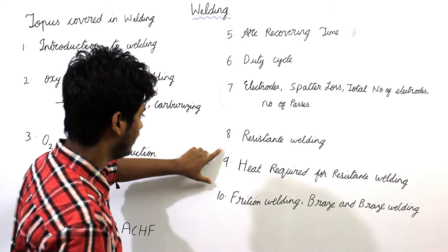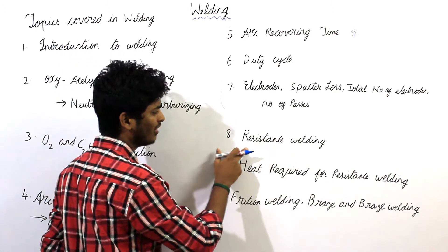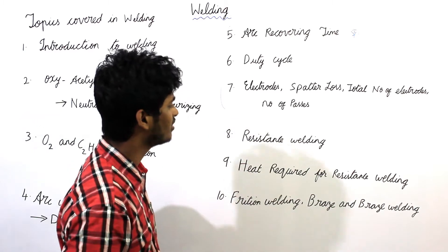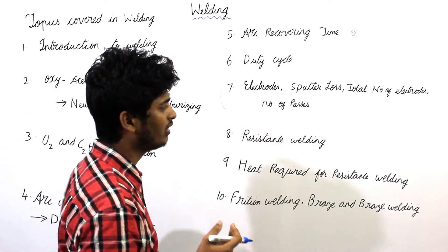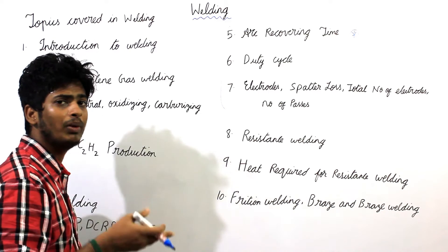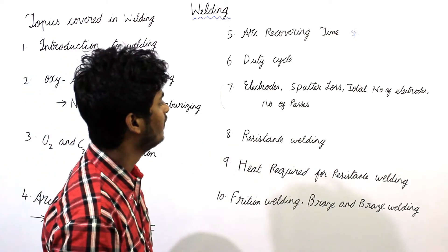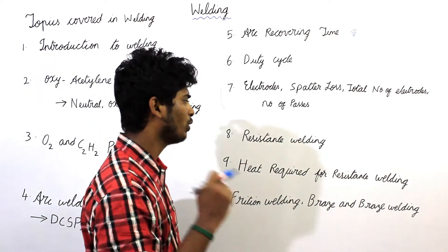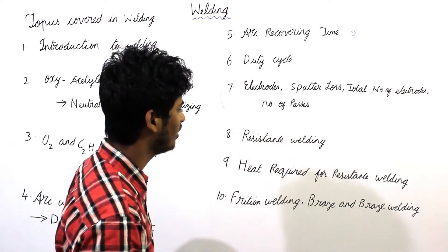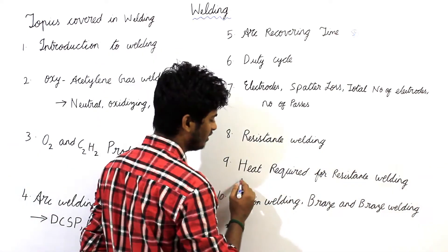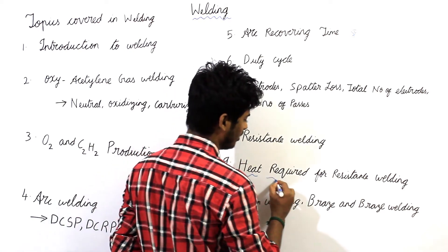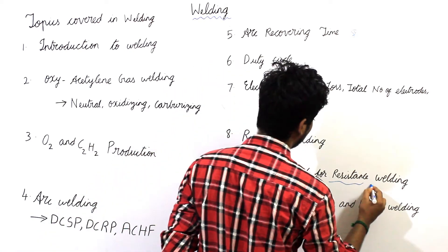The eighth topic is resistance welding. Under resistance welding, wherever the heat is required for melting and joining the metals, when that heat is produced from electrical resistance, then it is called resistance welding. We will see the heat required for melting and joining the metals by resistance welding.